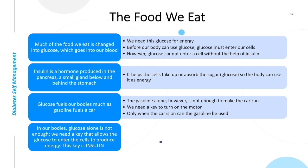Glucose fuels our bodies much as gasoline fuels a car. The gasoline alone, however, is not enough to make the car run — we need a key to turn on the motor. Only when the car is on can the gasoline be used. In our bodies, glucose alone is not enough. We need a key that allows the glucose to enter the cells to produce energy. This key is insulin.